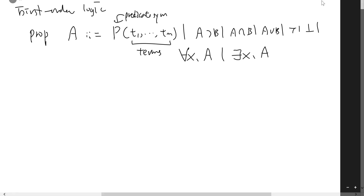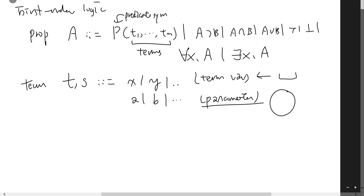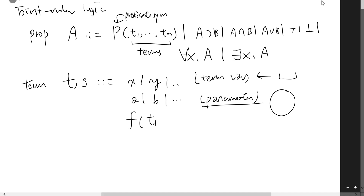We use meta-variables t and s for terms. We have term variables, and we have parameters. A parameter is actually a term — unlike a term variable, which is just a placeholder, a parameter actually represents a concrete term, but we know nothing about this term. We also have function symbols f applied to other terms, and as a special case, a constant is a function symbol with zero arguments.